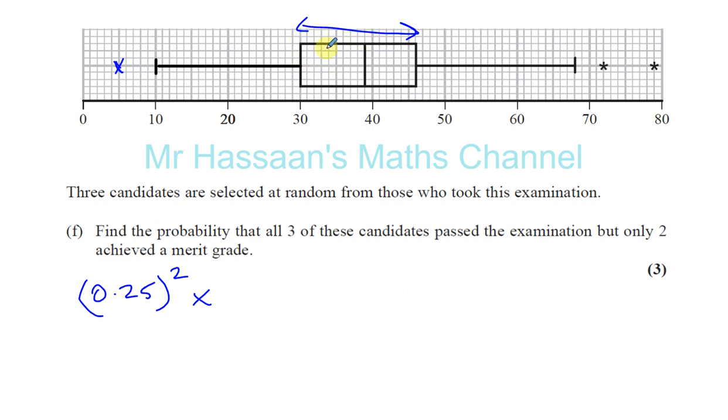Now, it could be that the first one got a merit grade, and the second one got a merit grade, and the third one passed. Or it could be that the first one got a merit grade, and the second one passed, and the third one got a merit grade. So there's basically three different options.